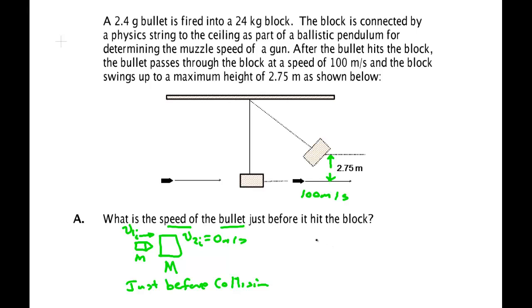And then the block will now have some velocity I'll call that velocity V star and the bullet will have some V1 final which is 100 meters per second. This is big M again and this is little m and I'll draw a coordinate axis. So this is just after collision.